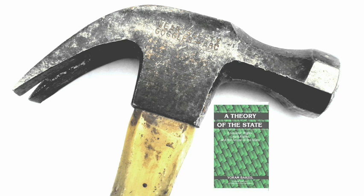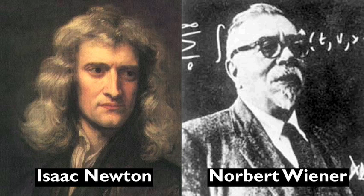If the state were simply an invention, we would not need a theory. The mysterious nature of the state has puzzled many thinkers, and this is how we have a theory of the state. Behind the hammer design are the laws of Newton and conservation of energy. Behind the creation of the state are the laws of control and communication — the cybernetic laws, which are just as prevalent and decisive as Newton's laws.